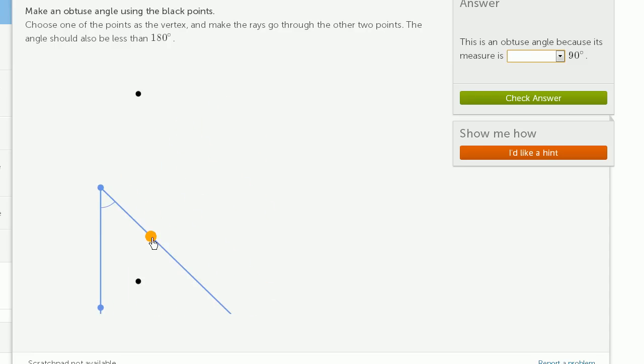So let me do that. Put the vertex right over there. And now it looks like I have constructed a 180 degree angle.